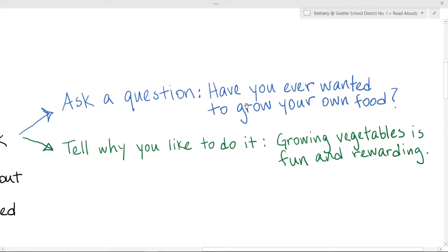Another way would be to tell the reader why you like to do the thing that you're teaching us about. For example, I could write, growing vegetables is fun and rewarding. So think about how you are going to get your reader interested in your book. Are you going to ask a question? Or maybe tell why you like to do that thing?